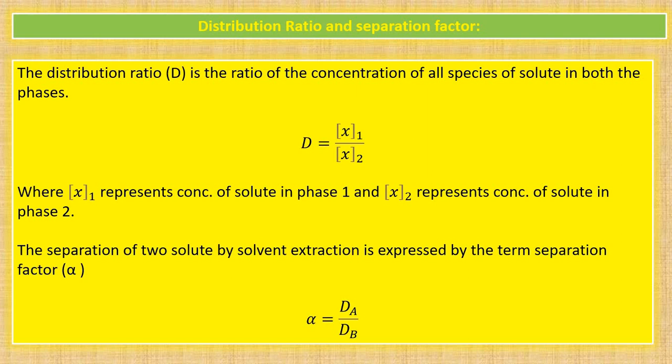Where x1 and x2 are the concentrations of solute in phase 1 and phase 2 respectively. So x1 is the concentration of solute in phase 1, and x2 is the concentration of solute in phase 2.